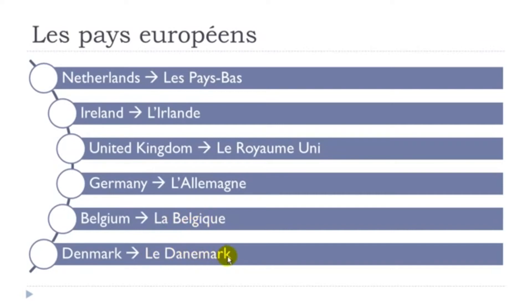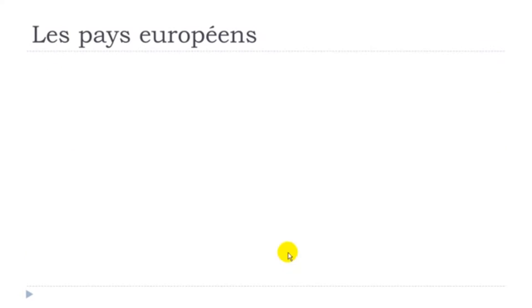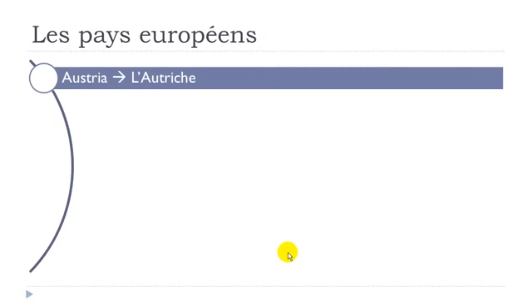Le Danemark — same sound here, and then Q-U-E produces the same 'k' sound. Le Danemark. L'Autriche — remember C-H here is pronounced like 'sh'. L'Autriche.